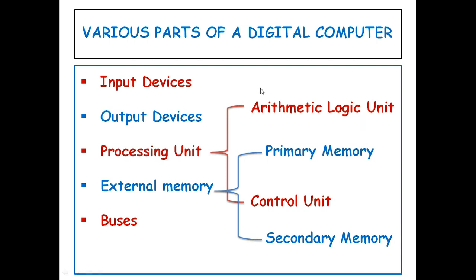Another part of a digital computer is buses. Buses are responsible for the movement of data from input devices to output devices, and from the CPU to memory and memory to CPU. The bus is a set of wires that connect input devices, output devices, the processing unit, and external memory.